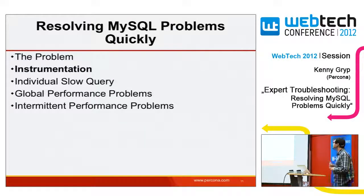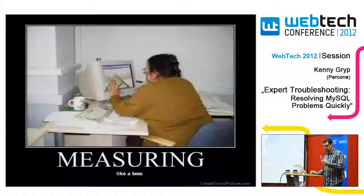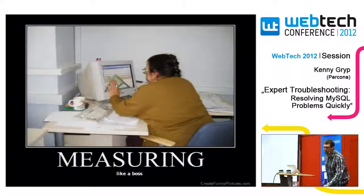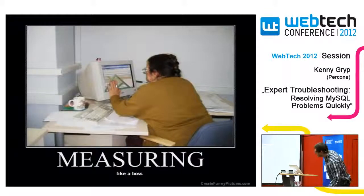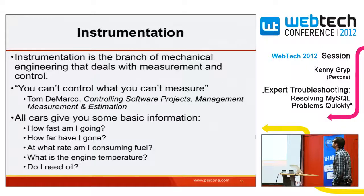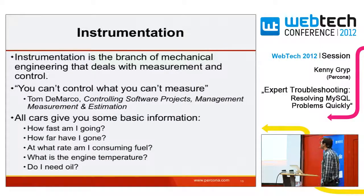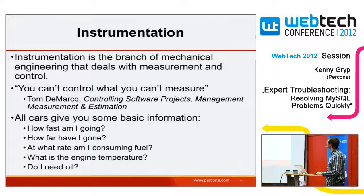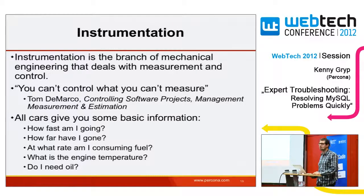Second chapter: instrumentation. It's all about measuring. Instrumentation is, by Wikipedia's definition, 'the branch of mechanical engineering that deals with measurement and control.' A quote from Tom DeMarco: 'You can't control what you can't measure.'